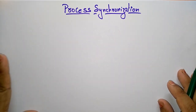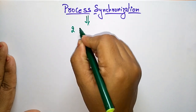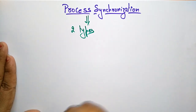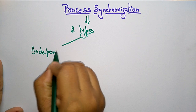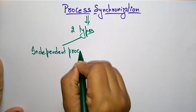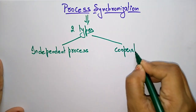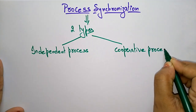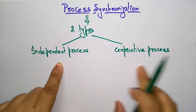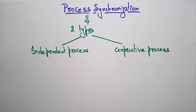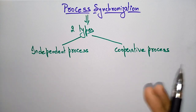On the basis of synchronization, processes are categorized into two types. One is independent process and the next one is cooperative process. The name itself indicates that independent means there is no dependency between one process and another process.